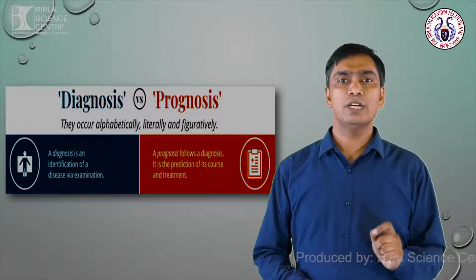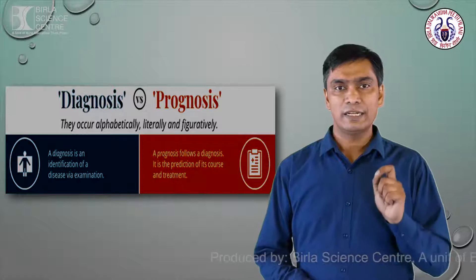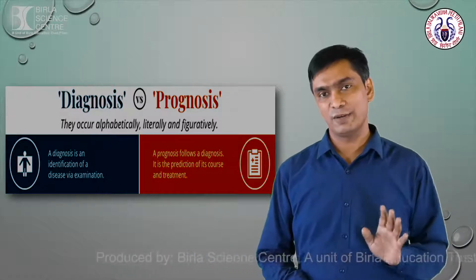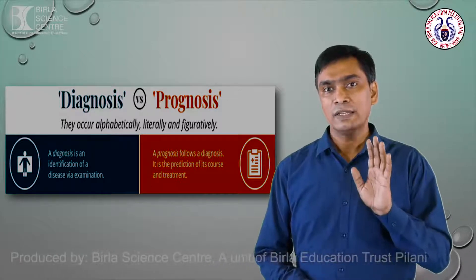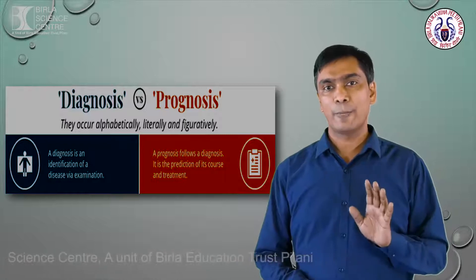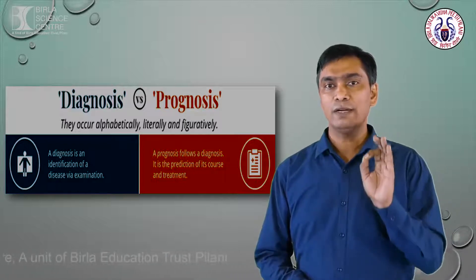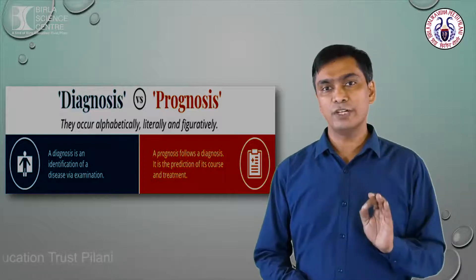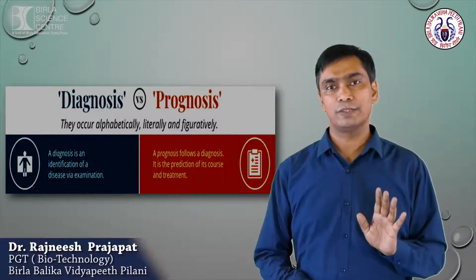The difference between the two terms: diagnosis and prognosis. Diagnosis is the identification of a disease via examination. Prognosis basically follows the diagnosis report, and using it, the doctor will decide the possible course of treatment and understand how the disease will develop.